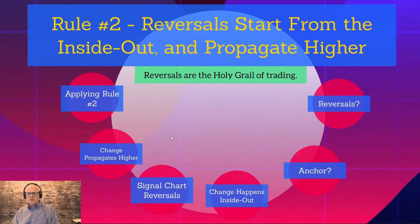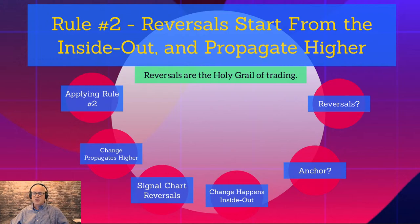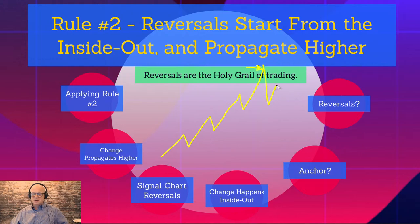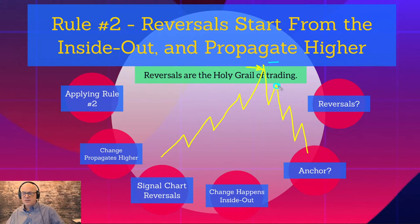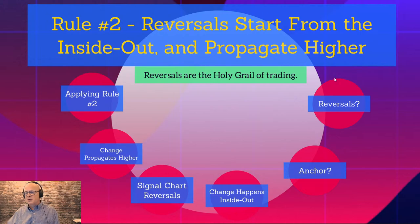Rule number two is the converse of rule one: reversals. How do reversals happen? Reversals are the holy grail of trading. Typically people see a trend, wait, think it's a pullback, and finally can't take it and chase — and that's exactly when it dies. If we identify the reversal, it's the best risk-reward we're ever going to find — the very first reversal at a smaller timeframe. Regardless of timeframe involved, a true reversal of trend offers the very highest reward-to-risk.